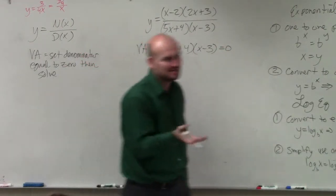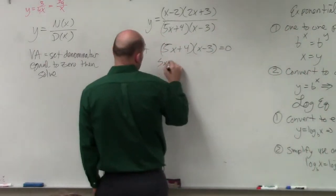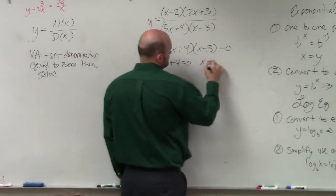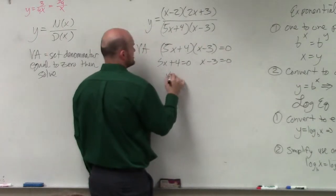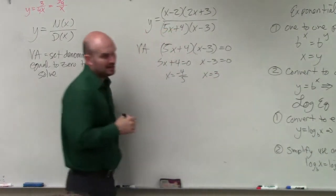So remember, when you have two factors set equal to zero, we can apply the zero product property to solve. And using some algebra, I have two asymptotes at 3 and negative 4 fifths.